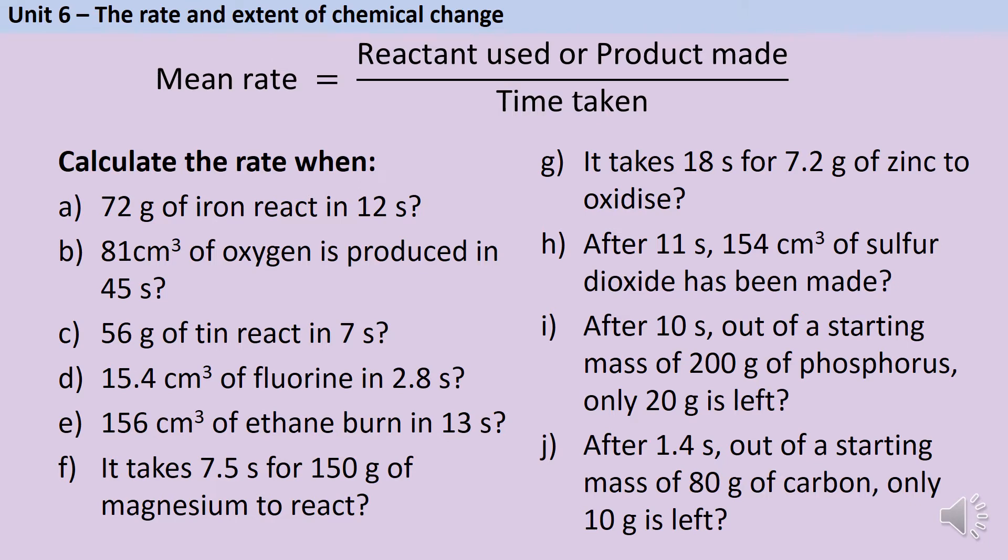So if 72 grams of iron reacts in 12 seconds, 72 grams is the mass, 12 seconds is the time. So I do 72 divided by 12 to get an answer of 6 grams per second. And it's grams per second because I was working with a mass, not a volume.